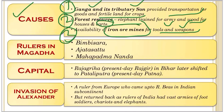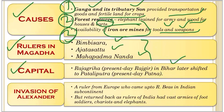Some important rulers of Magadha to remember are Bimbisara, Ajatashatru, and Mahapadmananda. The capital city of Magadha was Rajagriha, present-day Rajgir in Bihar, which was later shifted to Pataliputra, that is present-day Patna.